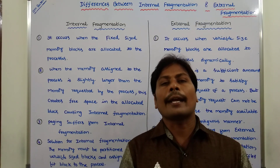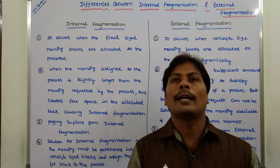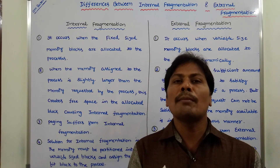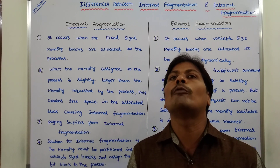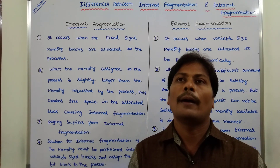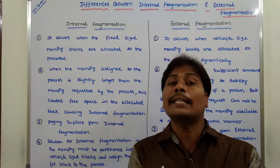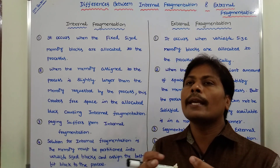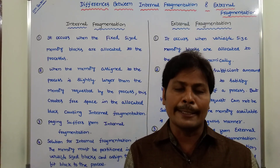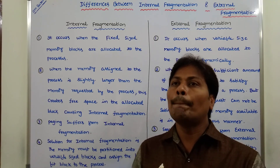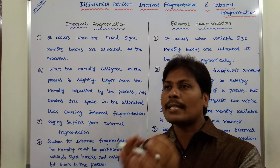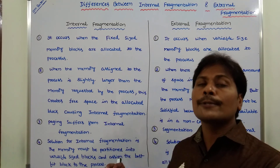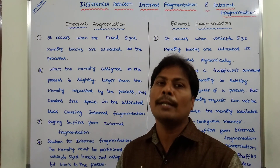What is the solution for internal fragmentation? The solution is that the total memory space is divided into variable-sized blocks, and the best fit block is allocated to the process. This is one solution for internal fragmentation.